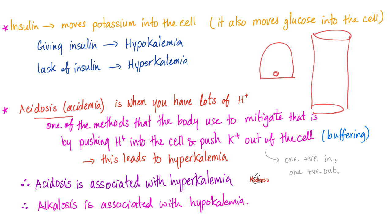Another important point is acidosis or acidemia. When there are too many protons in the blood, you can buffer them by switching some protons into the cell. To maintain electroneutrality, if a positive enters the cell, another positive has to leave — and that positive is the most abundant cation in the cell: potassium. Hydrogen comes in, potassium leaves and goes to the blood, causing hyperkalemia. That's why acidosis ends up with hyperkalemia.